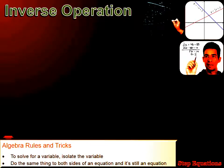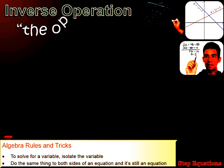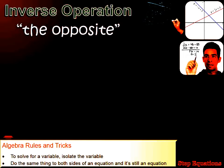Now we're going to learn about a trick to help us solve equations, and this trick is called inverse operations. An inverse operation is just the opposite. Multiplication's inverse operation is division — it's the opposite of multiplying. Addition's inverse operation is subtraction. Division's inverse operation is multiplication. So the inverse operation is just the opposite operation.